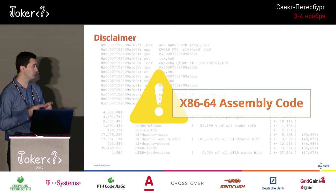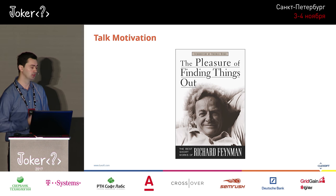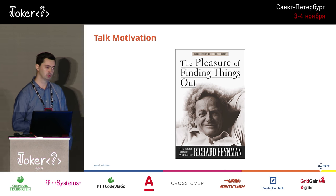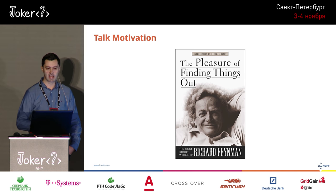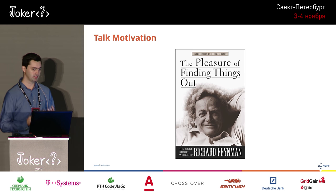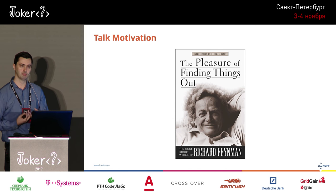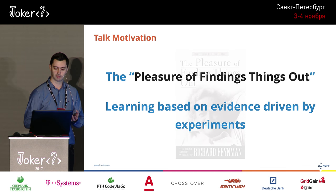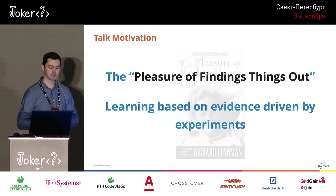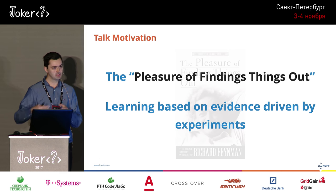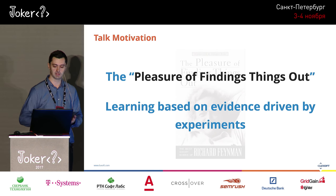I already kept the important parts. I'm a big fan of Richard Feynman — he won the Nobel Prize in Physics and wrote 'The Pleasure of Finding Things Out.' That's my main motivation for this research between two very different compilers: one ahead of time and one runtime. Learning based on evidence and driven by experiments is the best way to understand how things work under the hood.